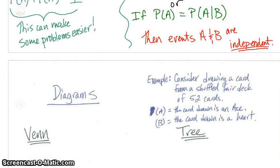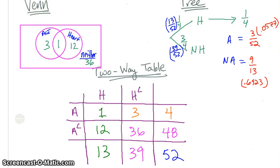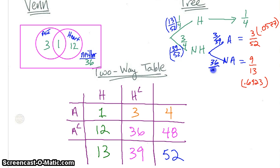Next example — diagrams. Consider drawing a card from a shuffled fair deck of 52 cards. If event A is the card drawn is an ace, and event B is the card drawn is a heart, can we make a Venn diagram, a tree diagram, or a two-way table? Here are my three diagrams. Note that we have 3 out of 39 here and 36 out of 39 here — those are the representations we could use.